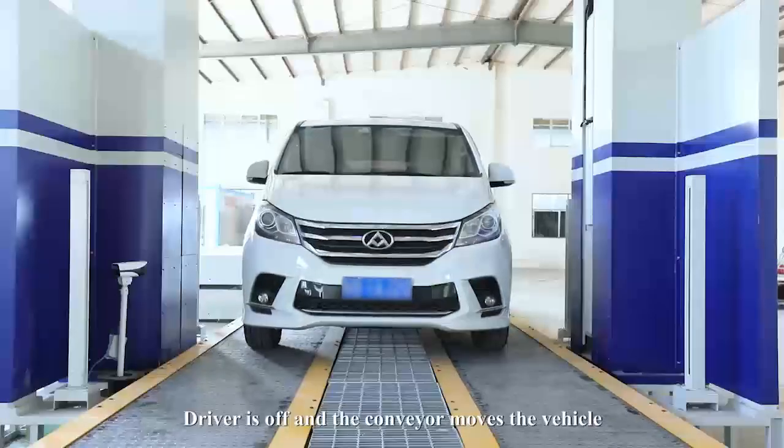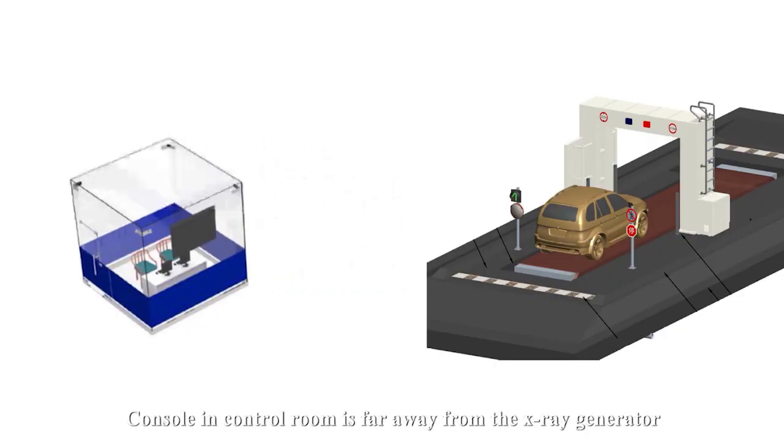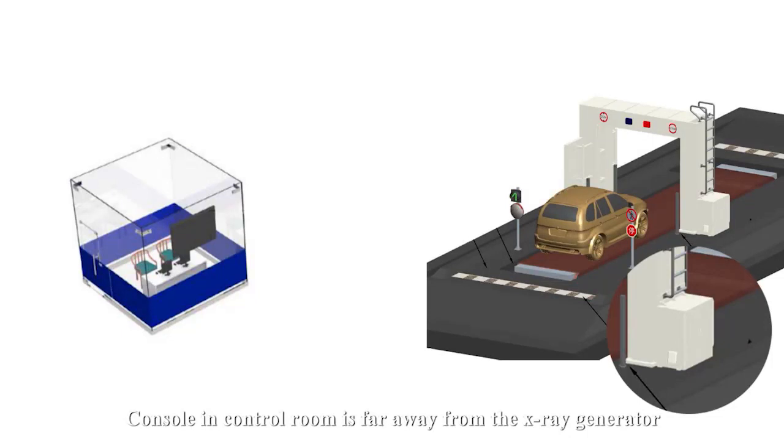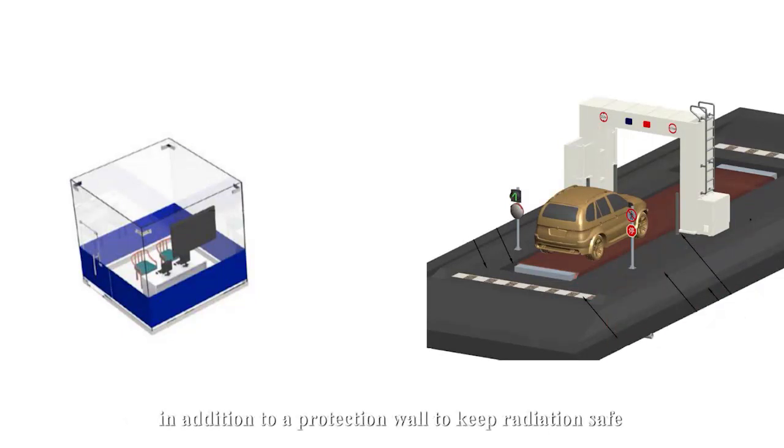Driver is off and the conveyor moves the vehicle. Console and control room is far away from the X-ray generator, in addition to a protection wall to keep radiation safe.